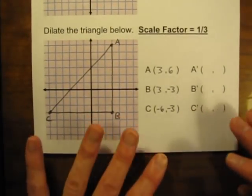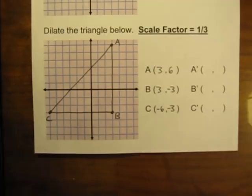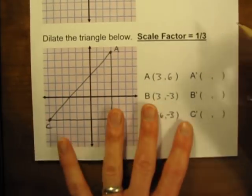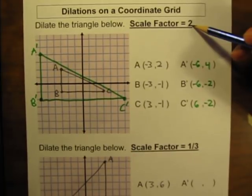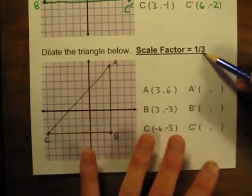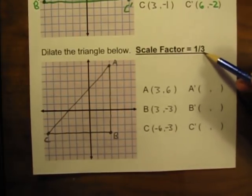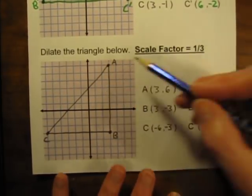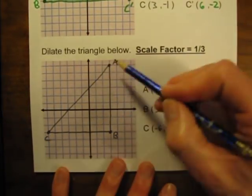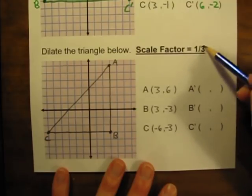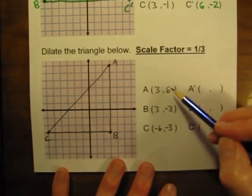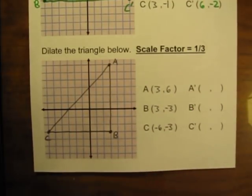What if we have a scale factor that is less than 1? What if our scale factor is 1 third? As you might expect, if the scale factor was 2 the new triangle is twice as big, so if the scale factor is 1 third, our new triangle will be only 1 third the size of the original. Here's our original triangle A, B, C — a very large triangle — and we're going to be reducing its size by multiplying the coordinates by the scale factor of 1 third.